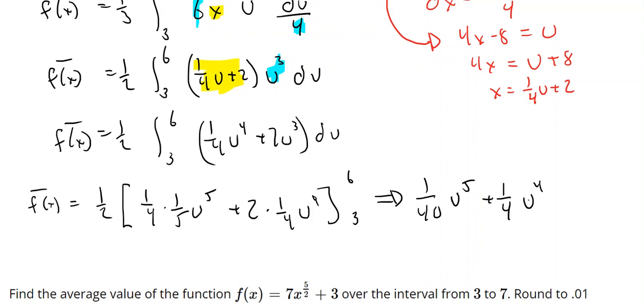And one last thing that we need to do now is we need to change these back into x's. So that will look like this. We're going to have 1 40th times 4x minus 8 to the fifth plus 1 fourth 4x minus 8 to the fourth evaluated from 3 to 6.